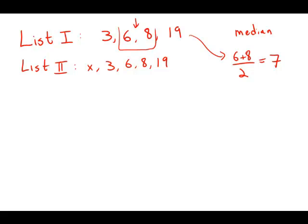So 7 is the median of the first list, so the second list must have a median of 7 also.